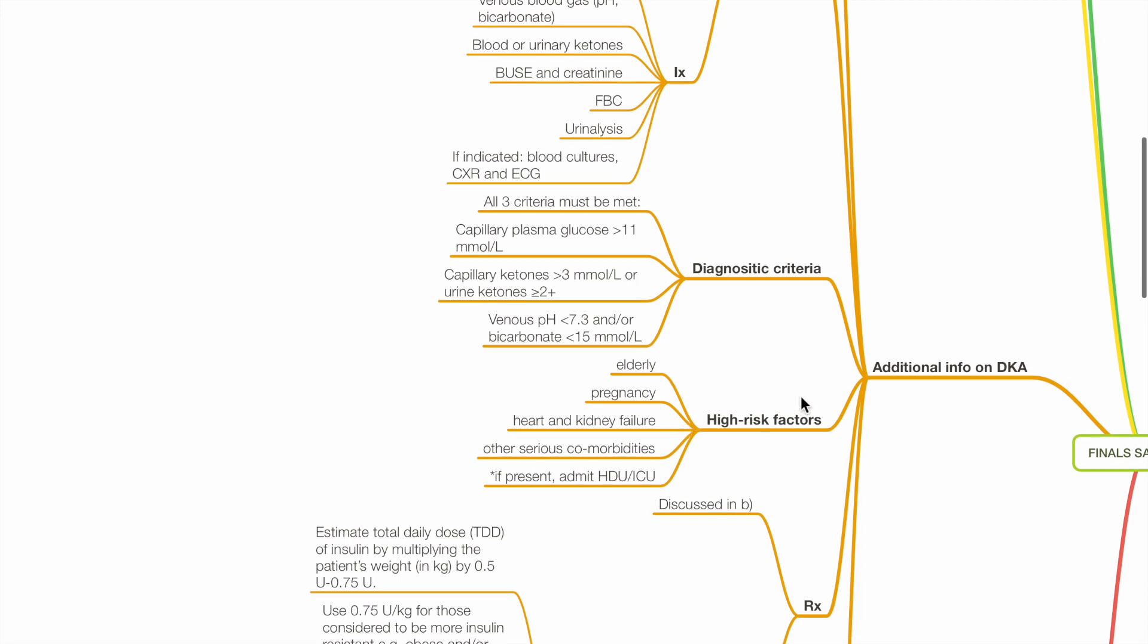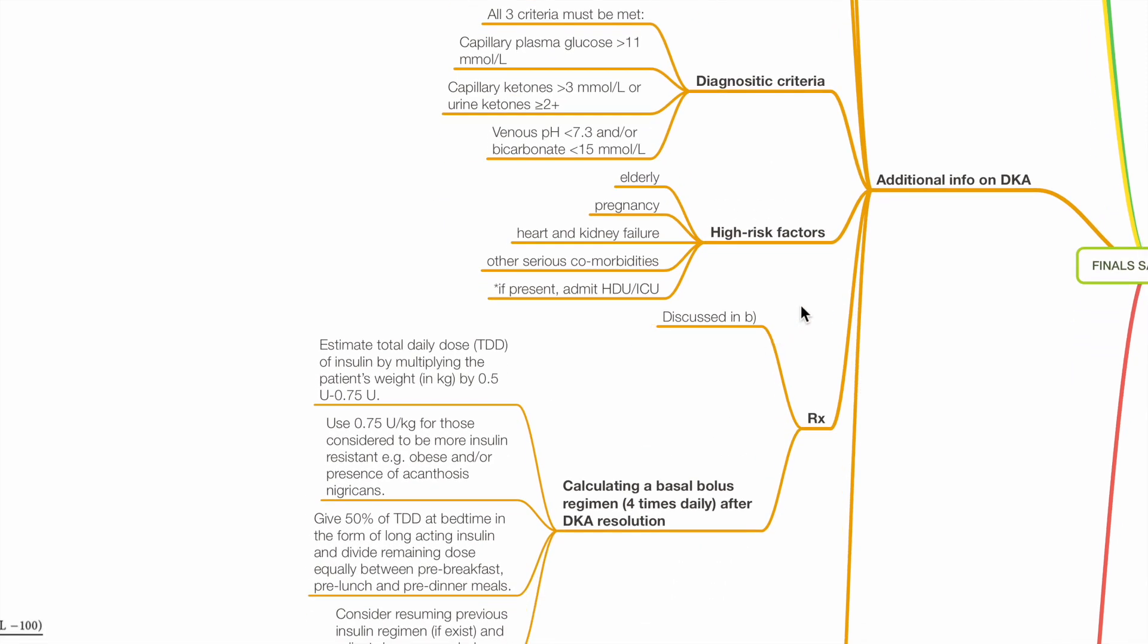Diagnostic criteria: All three criteria must be met. Capillary plasma glucose more than 11 mmol per liter. Capillary ketones more than 3 mmol per liter or urine ketones 2 plus or more. Venous pH less than 7.3 and/or bicarbonate less than 15 mmol per liter. High risk factors include elderly, pregnancy, heart and kidney failure, and other serious comorbidities. If present, aim for HDU or ICU care.